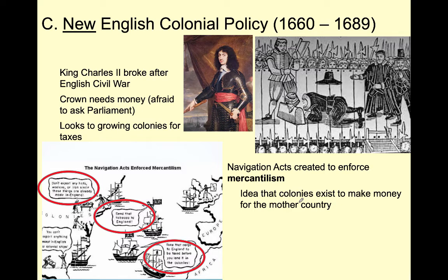The next part of the Navigation Acts says that cargo must go to England to be taxed before it can land in other countries. Not only do the colonies have to ship goods through England first, but a tax is also placed on them—because King Charles wants his money. This makes colonial goods more expensive when sold to France or Spain, meaning those countries may not buy them at all, hurting the colonies economically. Another provision says you can't export anything except in English or colonial ships, keeping Spanish and French merchants from profiting off English colonial trade. All of this is designed to help Mother England, with the unintended consequence of hurting the colonies' economy.